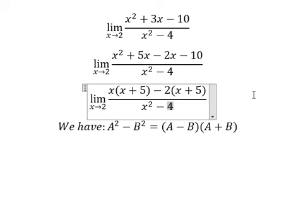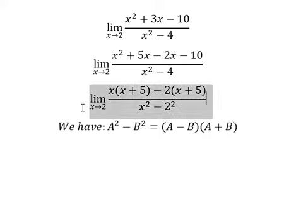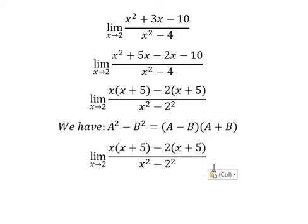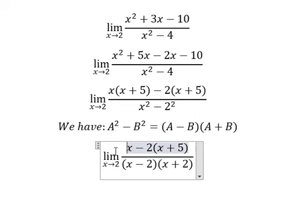Now we transform the denominator into (x - 2)(x + 2). The numerator factors as x(x + 5) - 2(x + 5), which equals (x - 2)(x + 5).